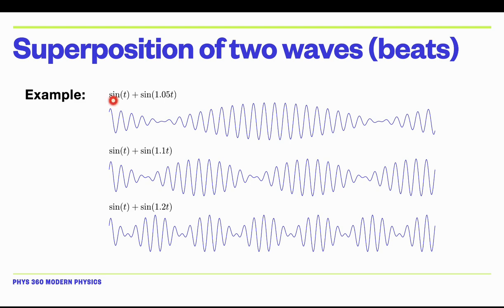Here are a few examples. If you take sine of t and add it to sine of 1.05t, the second term has a slightly higher frequency by five percent. When you add these two waves together, you get the beat phenomenon where the beats have a very low frequency and a very long wavelength. If the two sine waves differ by 10 percent instead of five, the beats have a slightly shorter wavelength — more beats in the same time. And if you increase the difference to 20 percent, you get many beats with a shorter period.